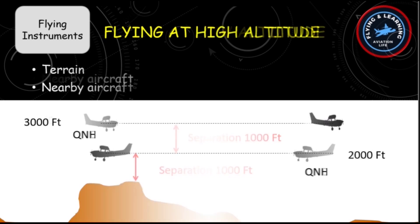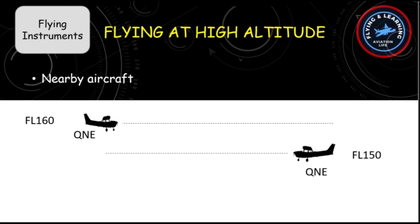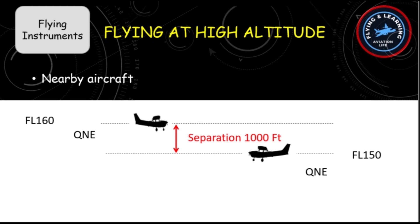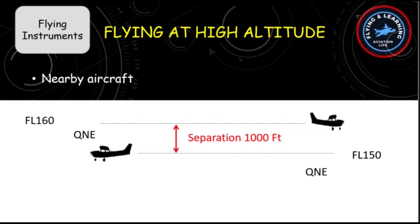If you are flying at high altitude, you only need to ensure vertical separation from nearby aircraft. To keep this standardized worldwide, all aircraft maintain QNE as the barometric reference at high altitude to ensure vertical separation. But what should you do when transitioning from low altitude to high level?